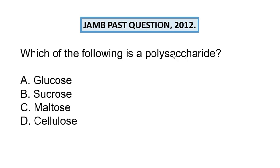The options are: A) glucose, B) sucrose, C) maltose, D) cellulose. Glucose is a monosaccharide, sucrose is a disaccharide, maltose is also a disaccharide, whereas cellulose is a polysaccharide. So the correct answer here is D.